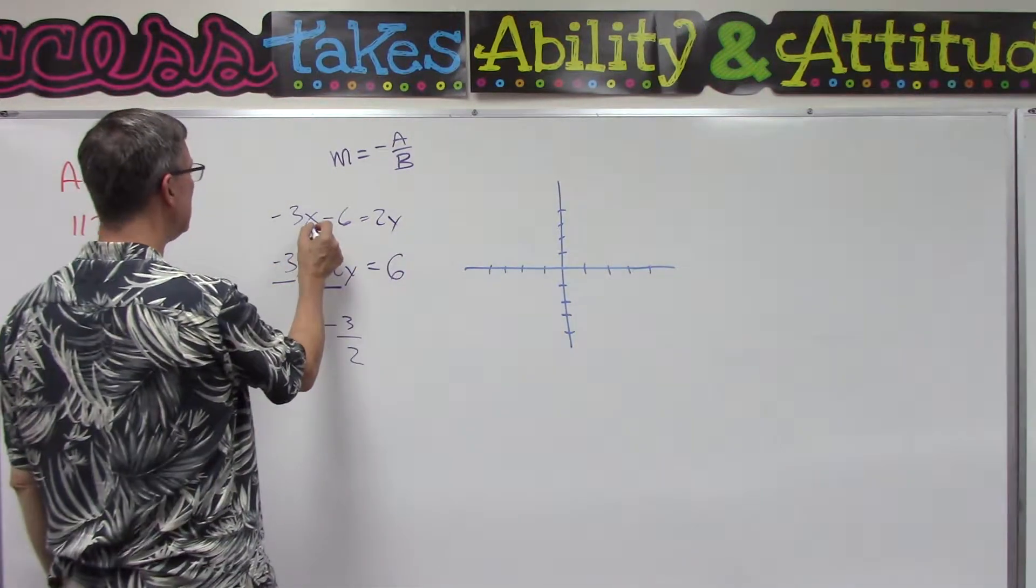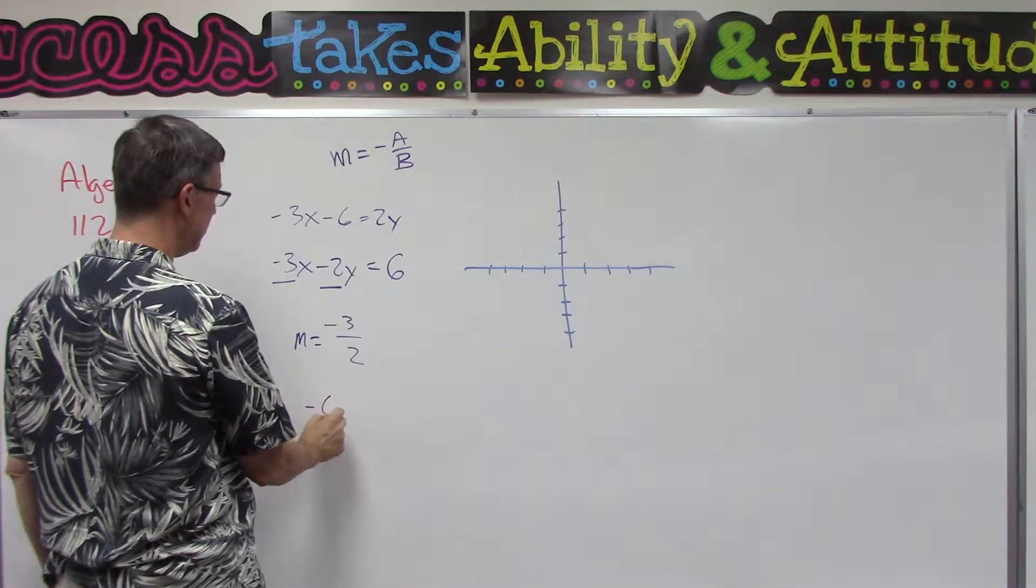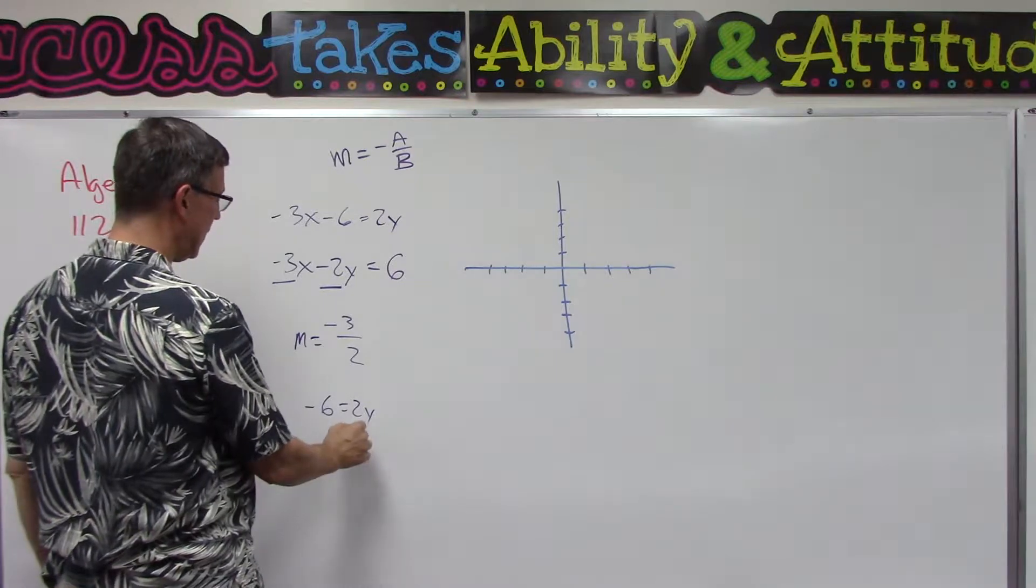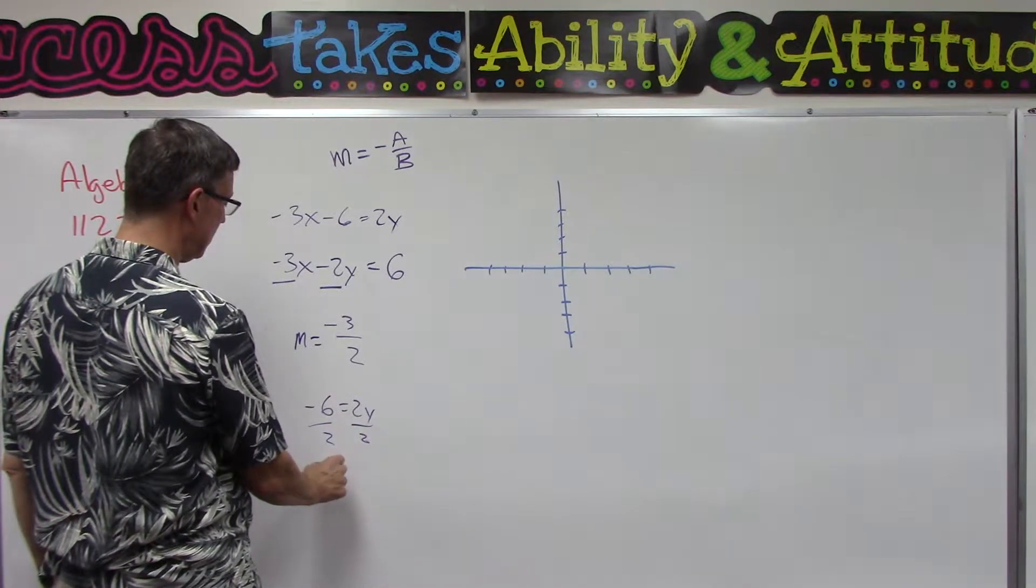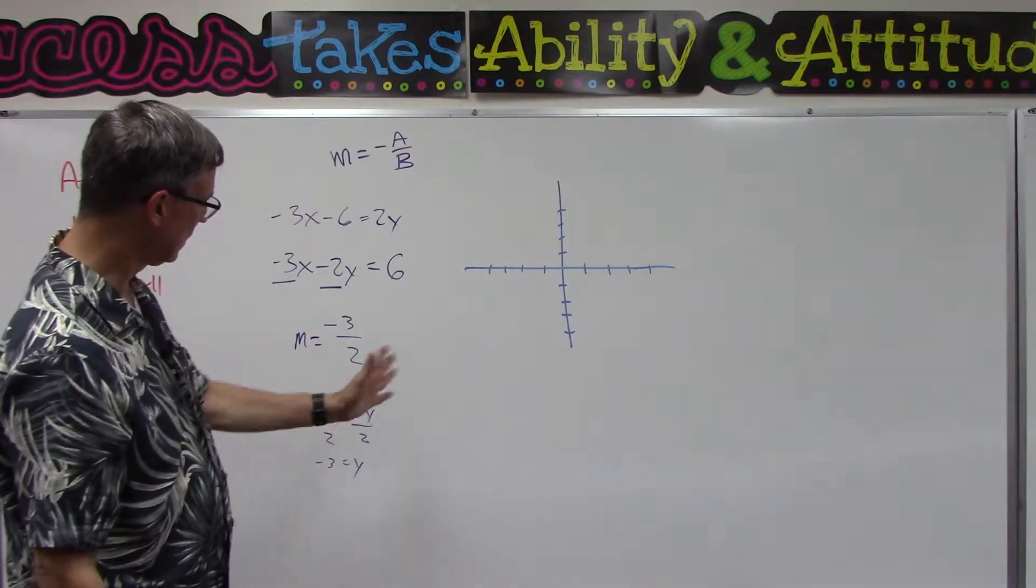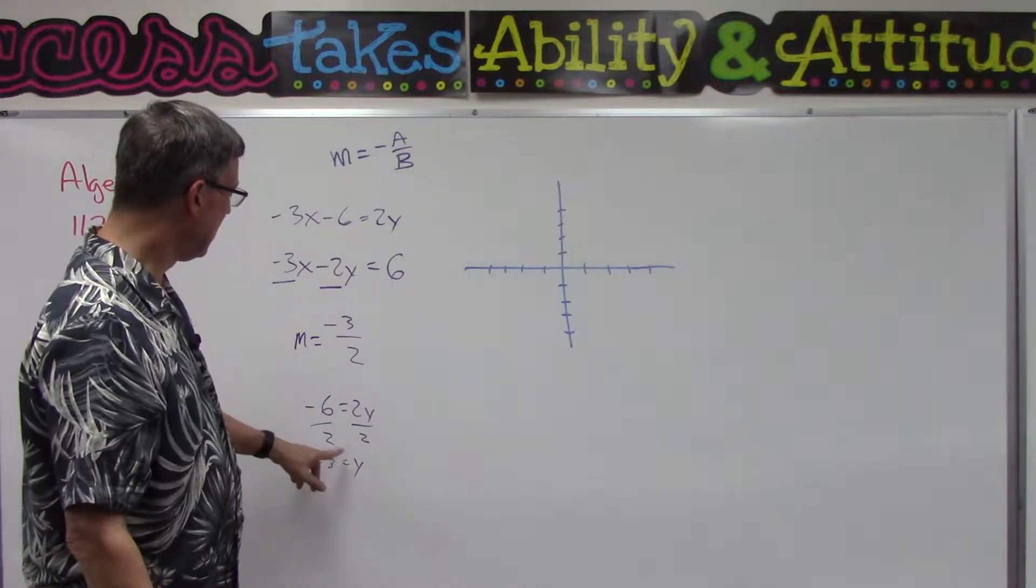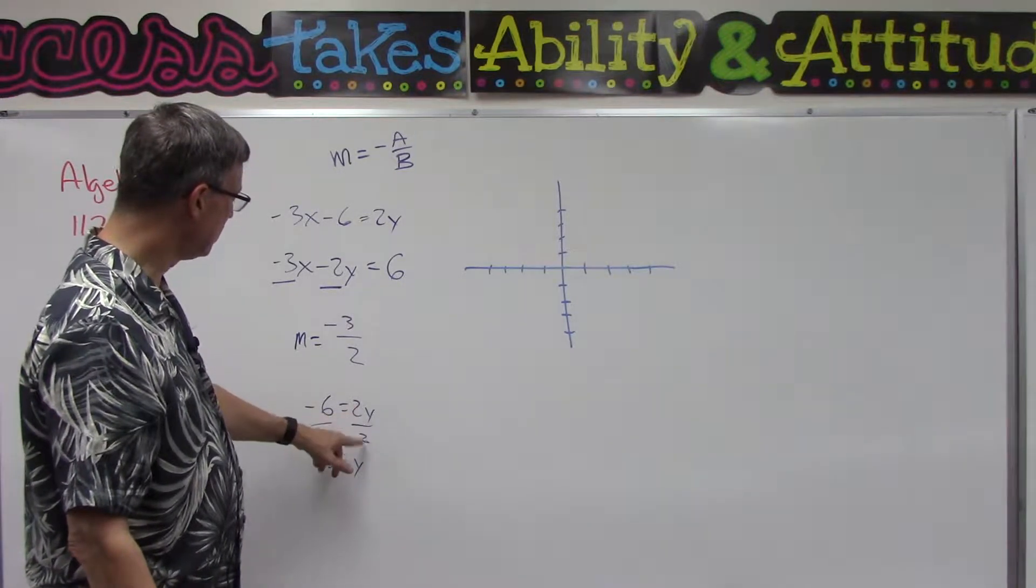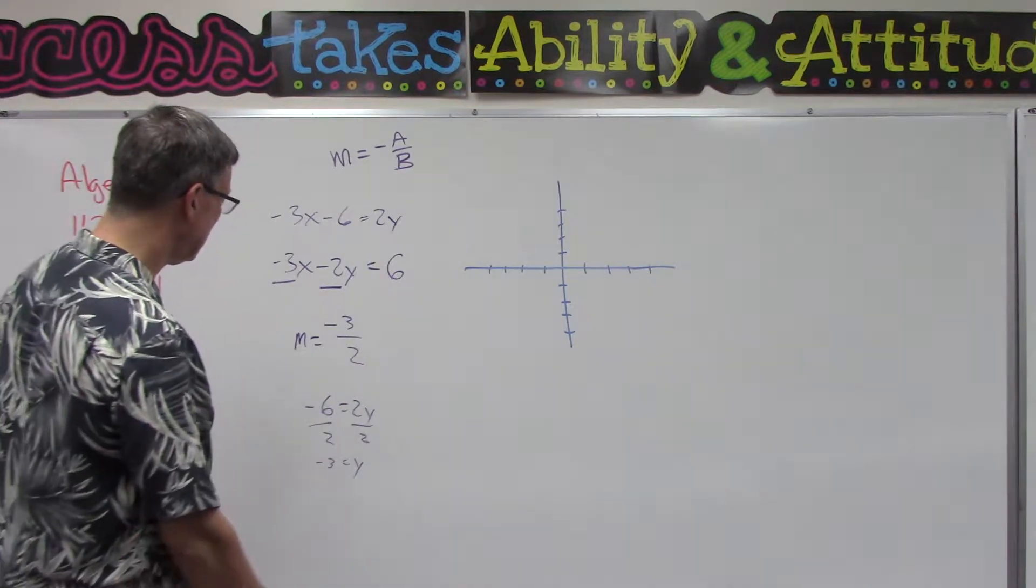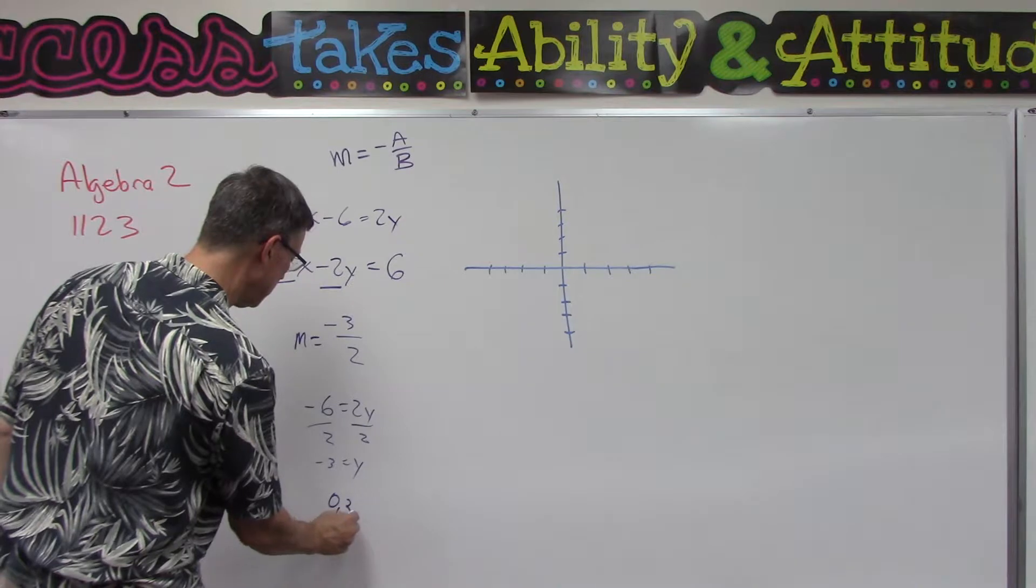If I plug in 0 here, negative 3 times 0 is just 0, so I end up with negative 6 equals 2y. Then I can divide both sides by 2, and I get negative 3 for y. I'm keeping the y on the right and solving for y. I would divide by this coefficient of 2 on both sides. So what that tells me is that the point (0, -3) is the starting point.